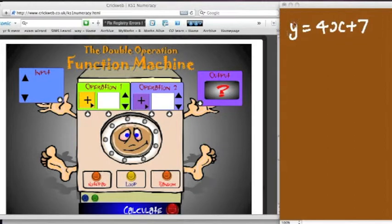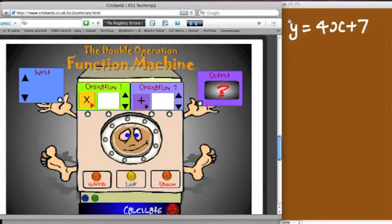Okay, so I want my first operation to be times by 4, so go to operation 1, and I've just got to change this until I get to times, lovely, 4, and then I need to add, that's already there for me, so I want to add on 7.